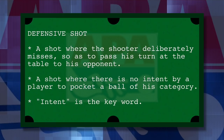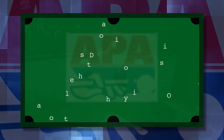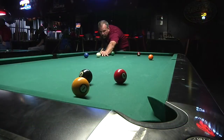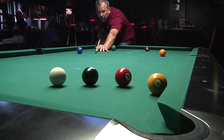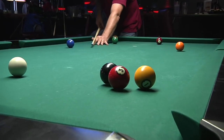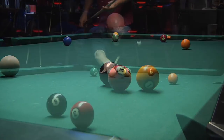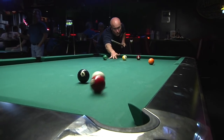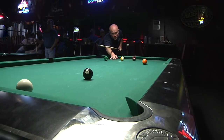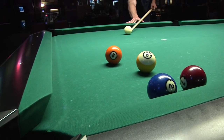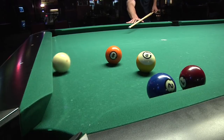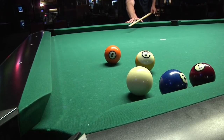Intent is the key word. Think of it this way: any time you are not playing offense, you are playing defense. If you are trying to pocket your object ball, you are playing offense. Any other shot is a defensive shot and should be marked as such on the score sheet.